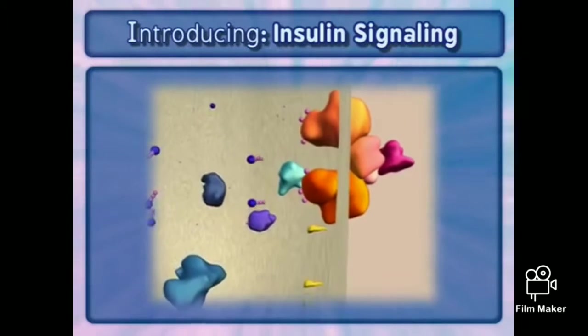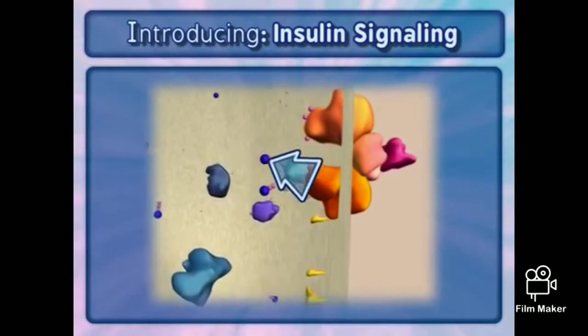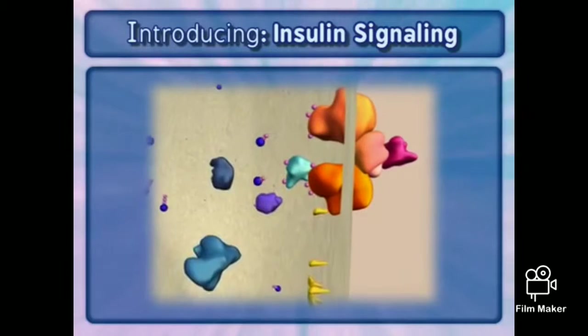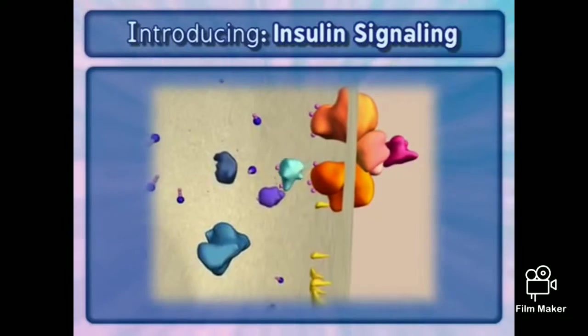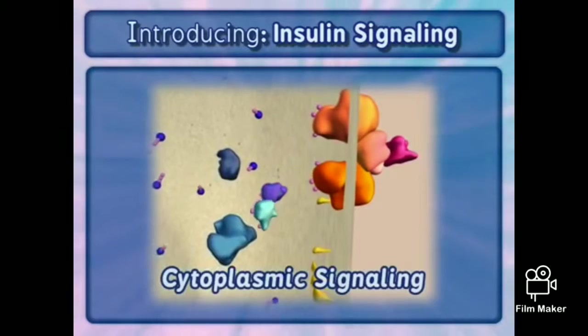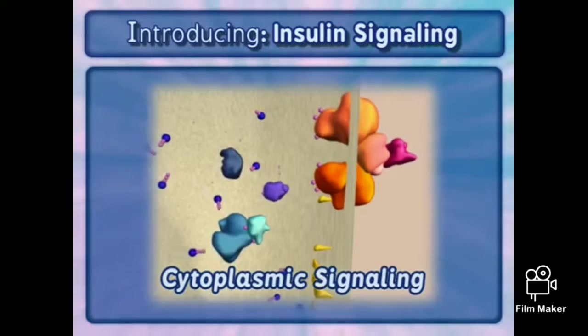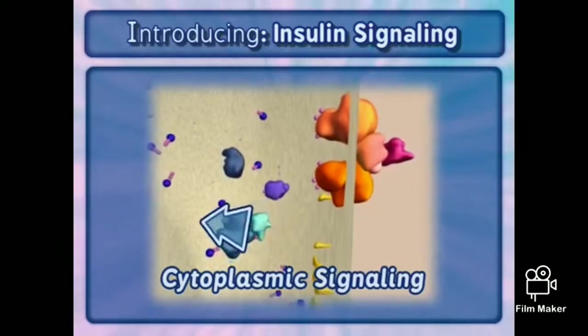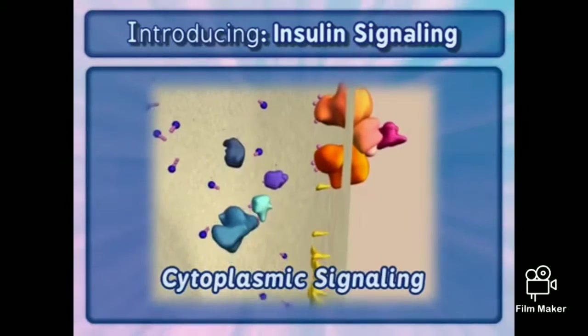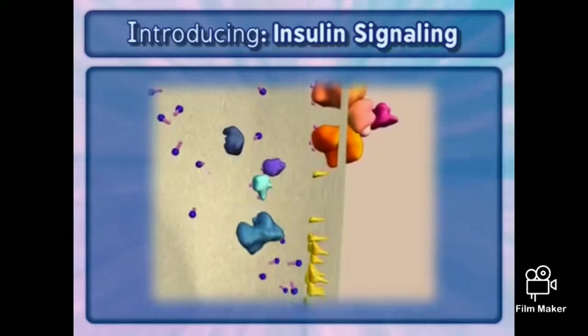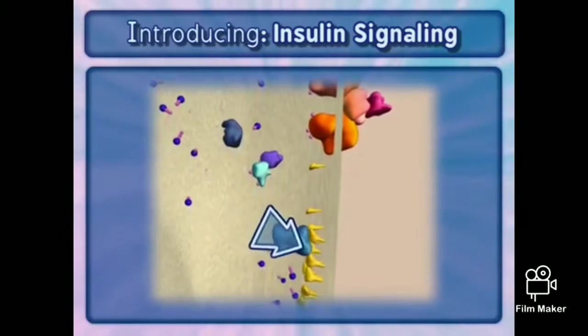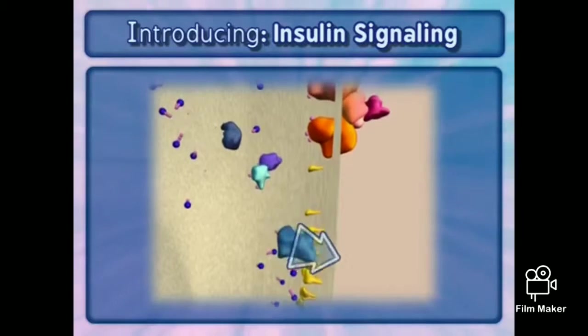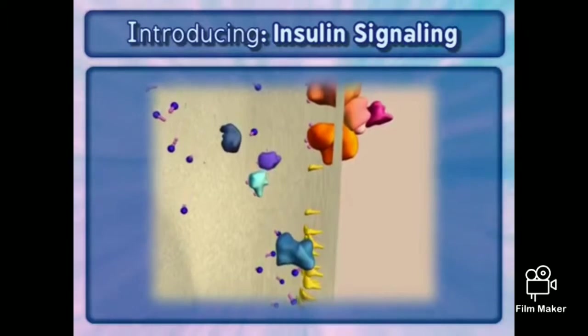This pathway involves multiple proteins and signaling events. This is termed cytoplasmic signal. Different types of cells perform similar signaling steps in response to changes in their environment.